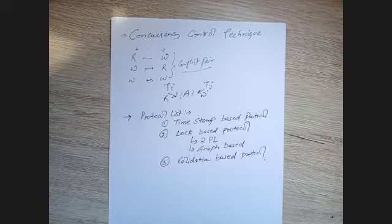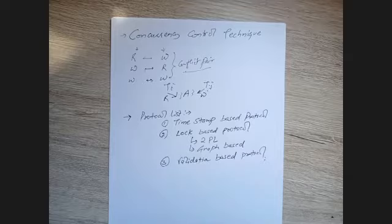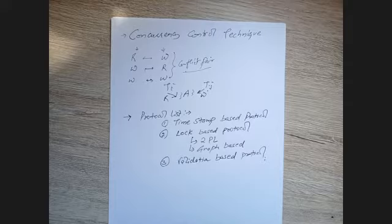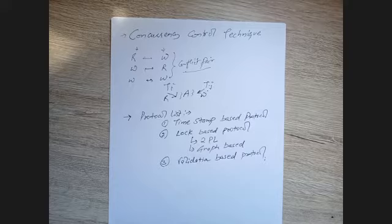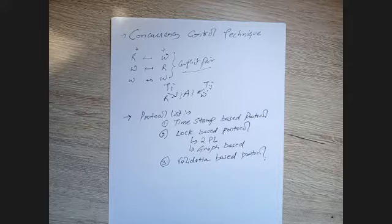In the lock-based protocol, if you want to use a data item, you lock it first, apply the operation, then unlock it. Other transactions cannot access the data item while it's locked — they must wait, then lock and unlock once their operations are done. Lock-based technique provides isolation because only the locking transaction has access to modify that data item.